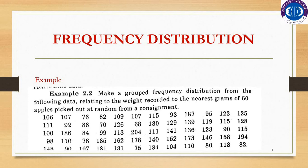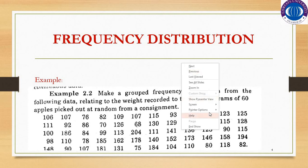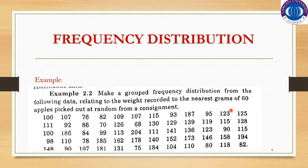The very first step is to find out which is the lowest value and which is the highest value in the data. If you concentrate on the data, you will find that the lowest value is 68, and the highest value is 204.